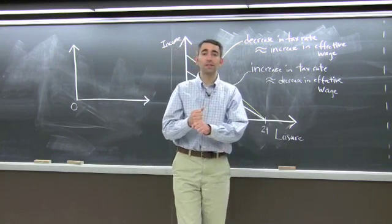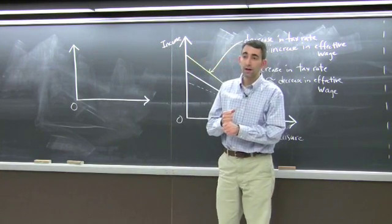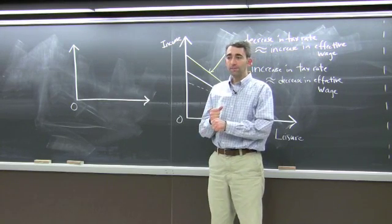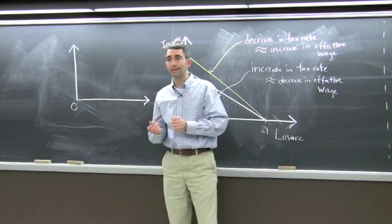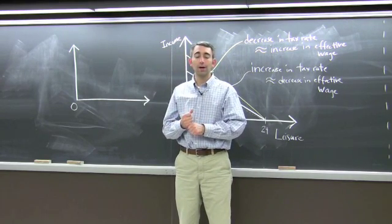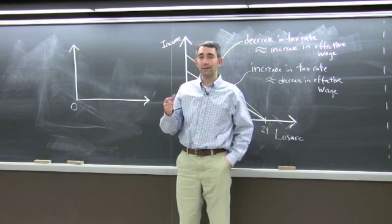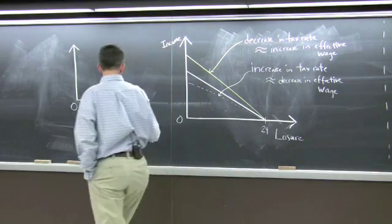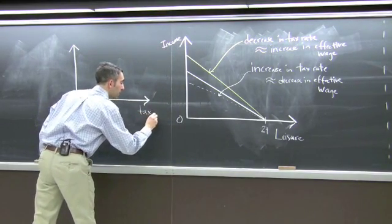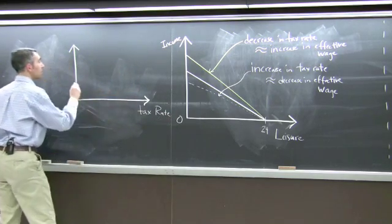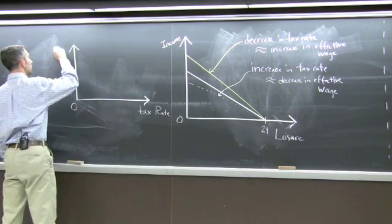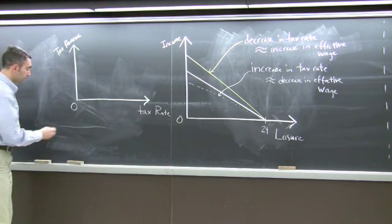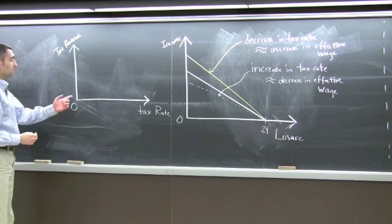I want to tie this together with one other concept that you may remember from micro-principles. If you've taken intermediate, you surely saw it there as well, and that's the Laffer curve. During the 1980s and supply-side economics, Art Laffer became well-known for this relationship between tax revenue and the tax rate. If you were to graph it this way and put tax rate down here and then measure the tax revenue collected on this axis, this is the relationship that you get.